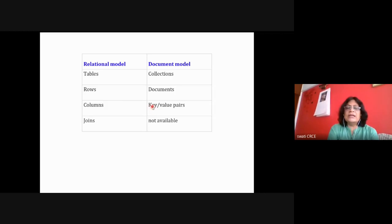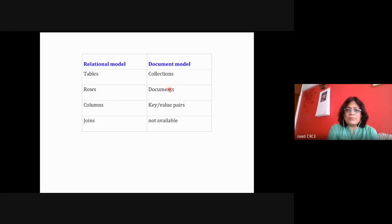A column element for a particular row or document is a key-value pair, where key indicates the name of the column and value indicates the field value. All these key-values combine together into a document. A document is similar to a row of the table, and a group of documents — a collection of documents — is your table.